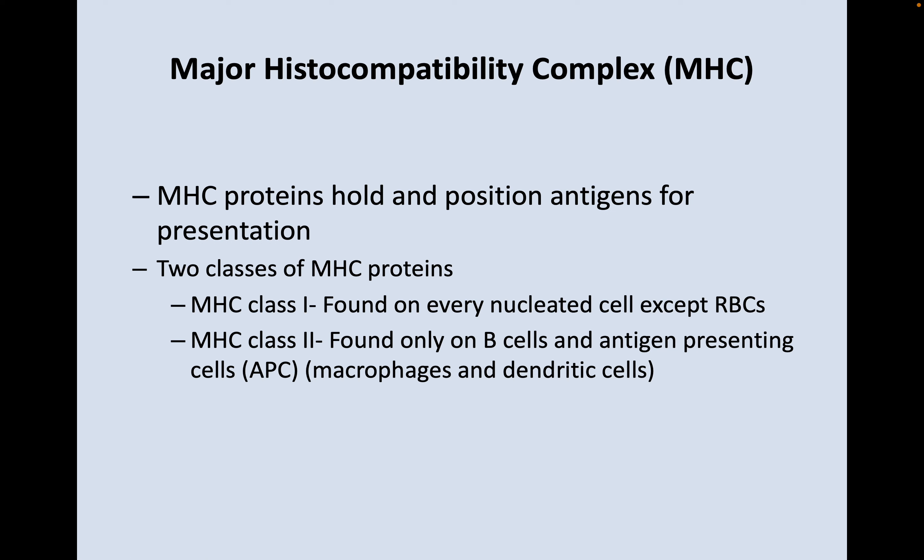Let's talk more about MHC, or the major histocompatibility complex. MHC proteins hold and position antigens for presentation, and there are two classes. MHC class 1 proteins are found on every nucleated cell except red blood cells — red blood cells in humans don't have a nucleus. MHC class 2 proteins are found only on B cells and antigen-presenting cells, things like macrophages and dendritic cells.